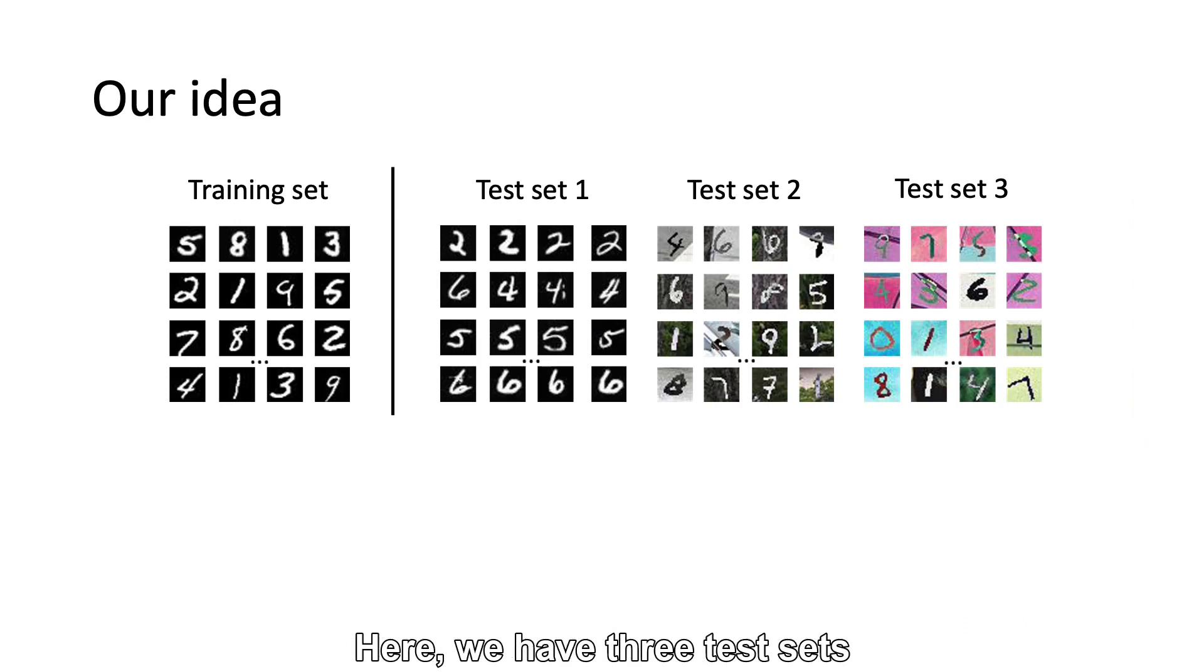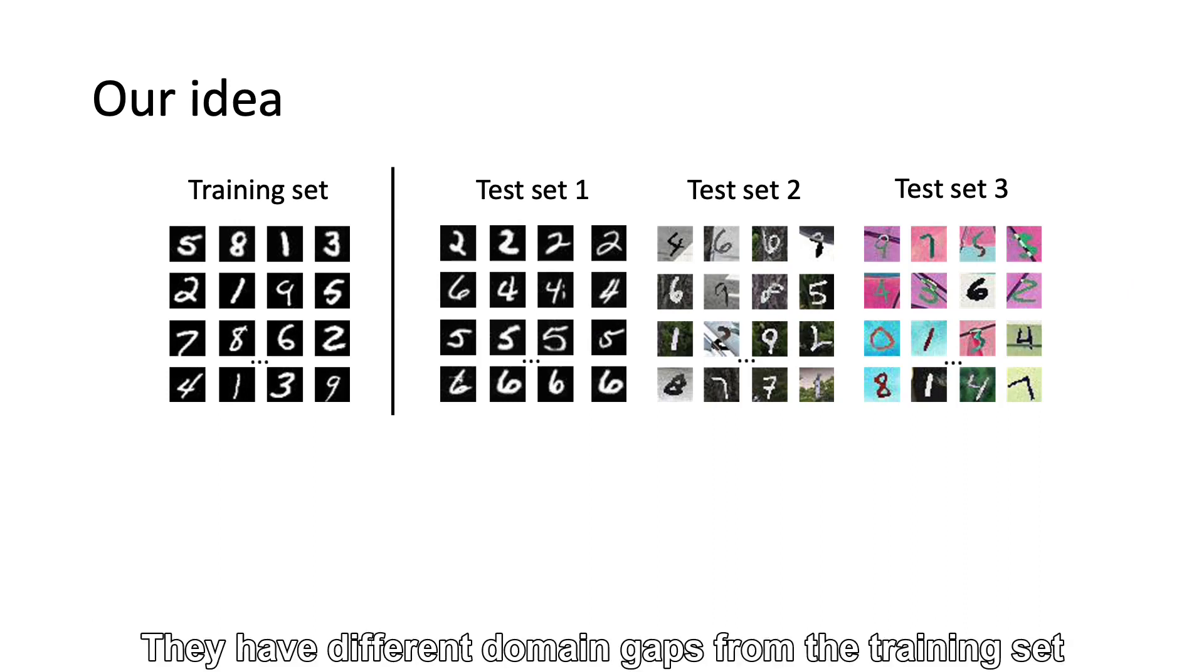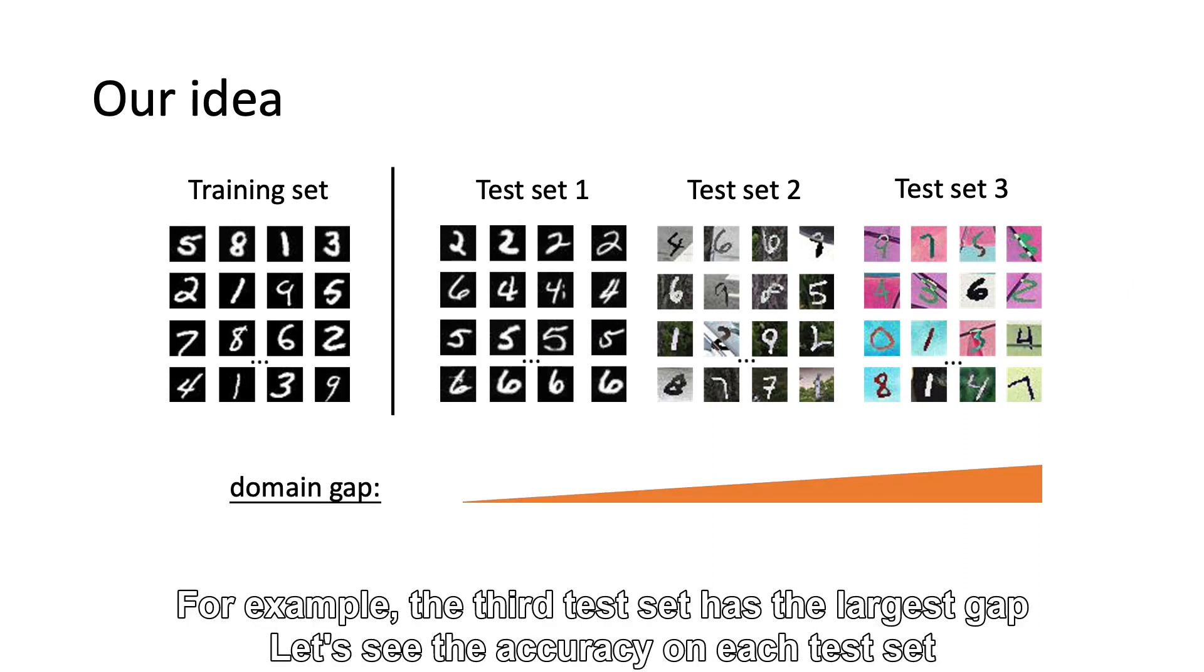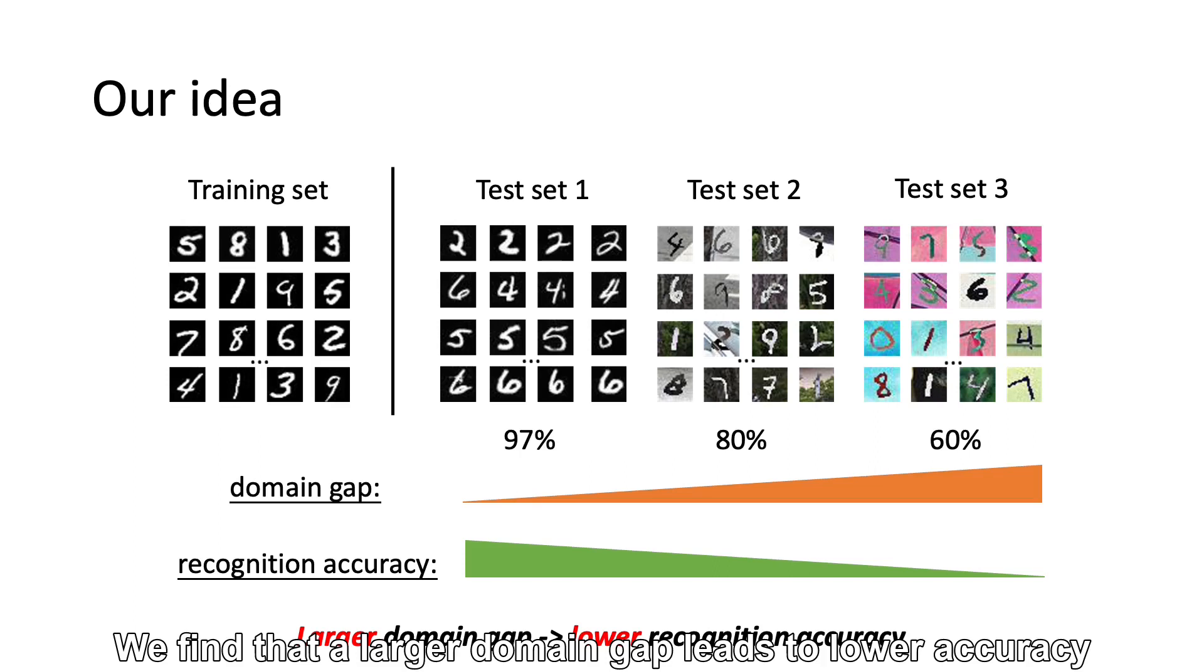Here we have three test sets. They have different domain gaps from the training set. For example, the third test set has the largest gap. Let's see the accuracy on each test set. We find that larger domain gap leads to lower accuracy.